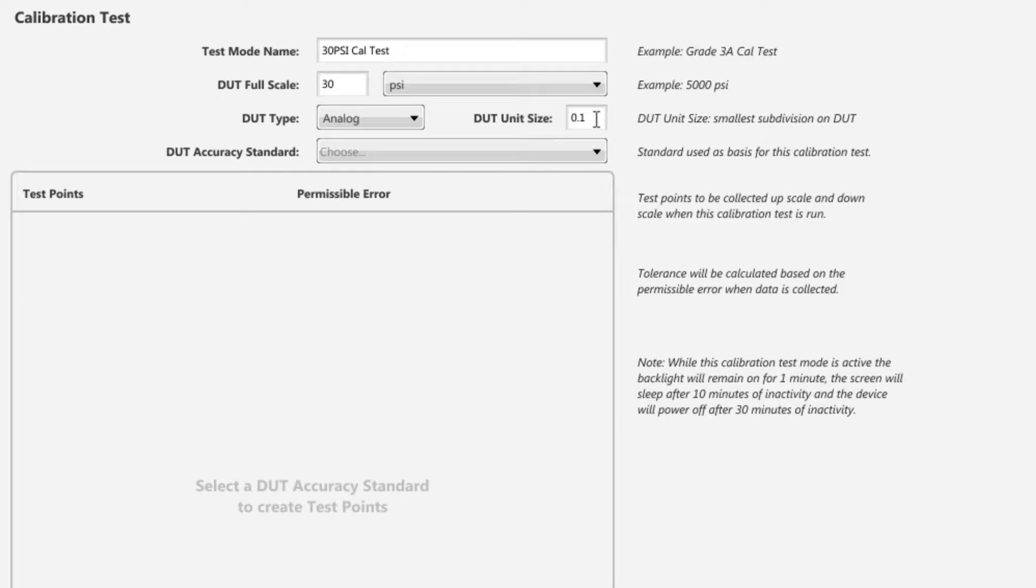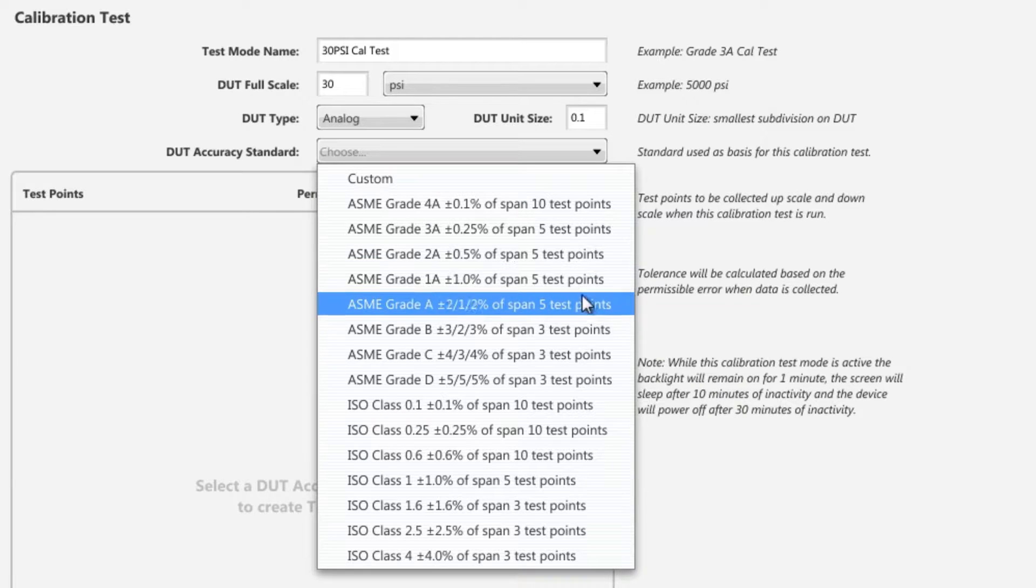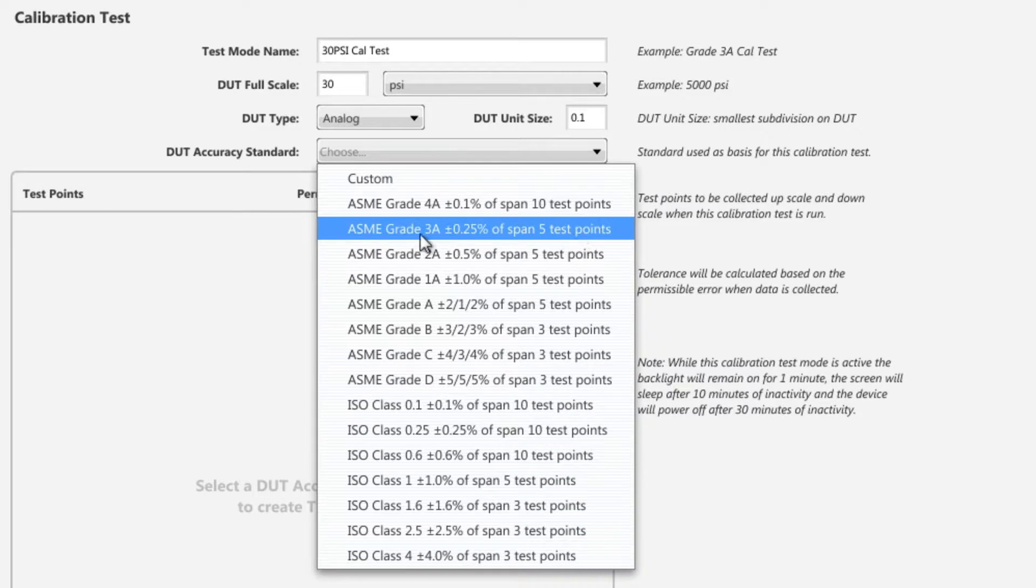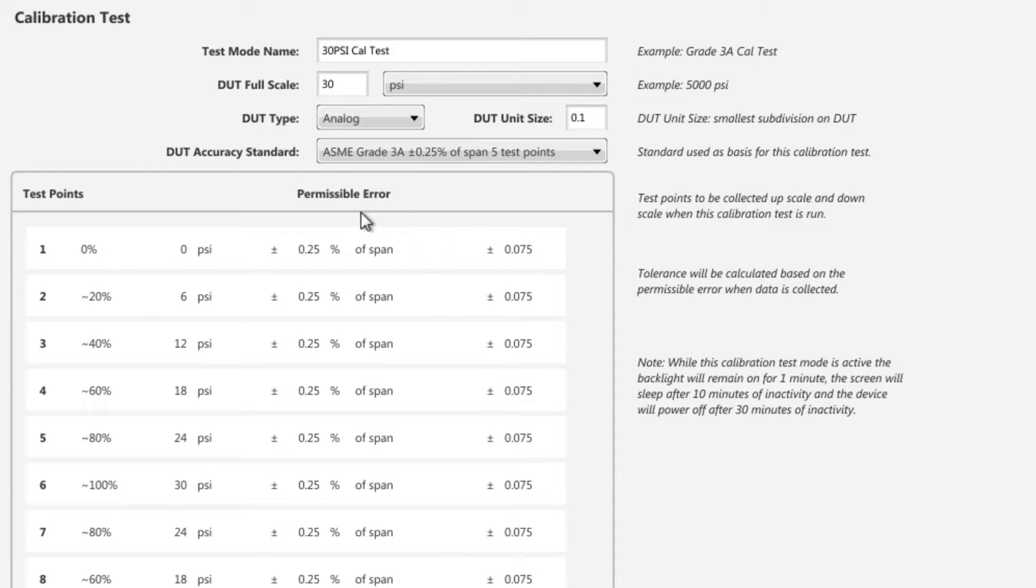You can also select the standard set of test points, or customize your own. Since our DUT is a quarter percent of full-scale accuracy, we'll set the accuracy standard at ASME grade 3A, which tells us we end up with a permissible error of plus or minus 0.075 PSI, and a series of 5 test points over the span of the gauge.